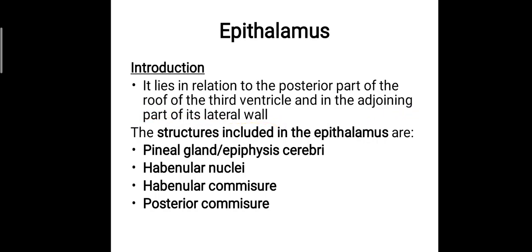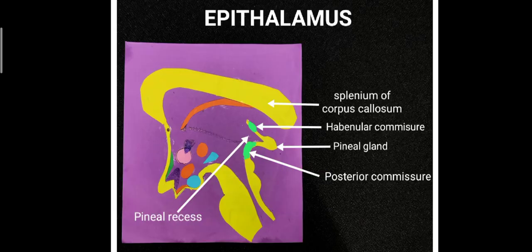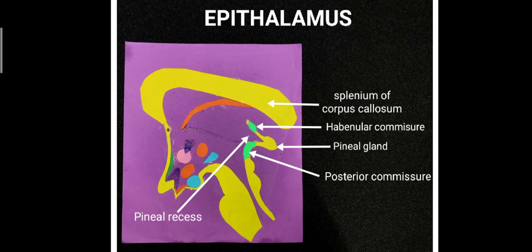The structures included in the epithalamus are the pineal gland or epiphysis cerebri, the habenular nuclei and habenular commissure, along with the posterior commissure. In the diagram, the yellow-colored part represents the corpus callosum, formed by commissural fibers between the two cerebral hemispheres. The tail part of the corpus callosum is termed the splenium, and below that you can see the pineal gland, the habenular commissure, the posterior commissure, and a small pineal recess extending into the two laminae of the stalk.